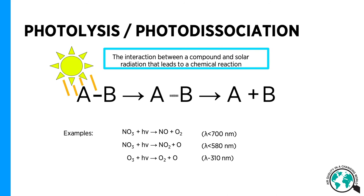Photolysis is the interaction between a compound and solar radiation that leads to a chemical reaction. Solar radiation is the source of energy that can break a chemical bond if sufficient amount of energy is provided.